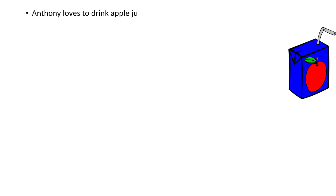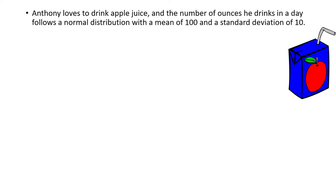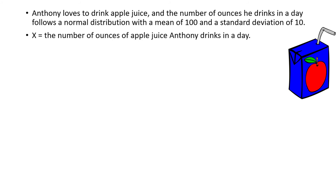If you didn't watch my video where I introduced the normal distribution, I highly recommend you check out that video first. Anthony loves to drink apple juice, and the number of ounces that he drinks in a day follows a normal distribution with a mean of 100 and a standard deviation of 10. If we let x represent the number of ounces of apple juice that Anthony drinks in a day, then x is normally distributed with a mean of 100 and a standard deviation of 10.